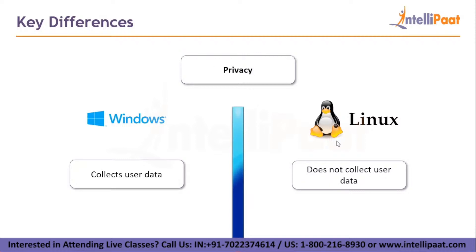Regarding privacy: Windows collects user data, while Linux OS does not collect user data — and this reason alone is enough for some users to shift to Linux. Regarding pricing: the personal single-user Windows OS costs anywhere between $99 to $199, and the Windows Server family OS for enterprise use can start at $6,155. Linux is completely free; however, certain distros like Red Hat Linux and SUSE might require subscriptions.